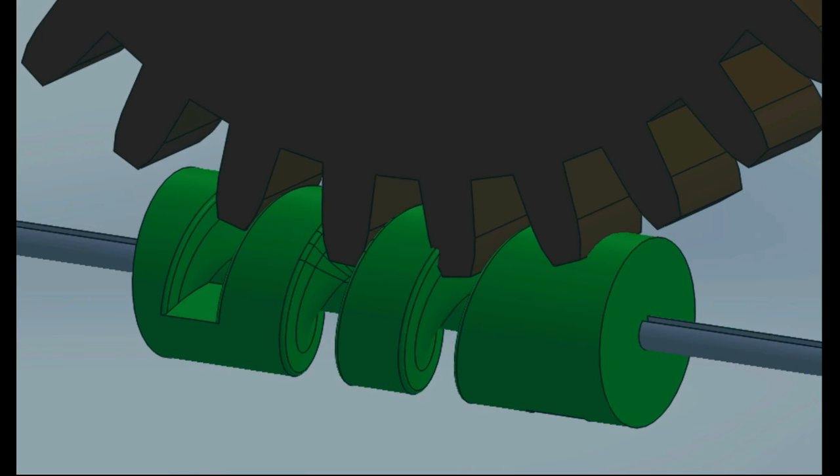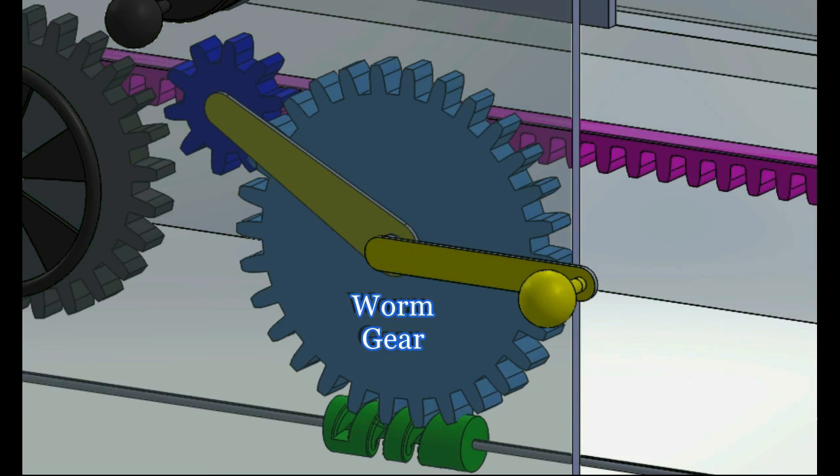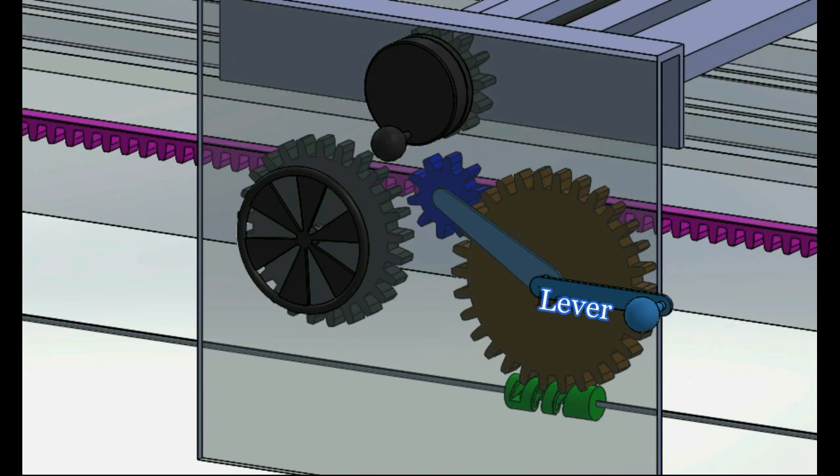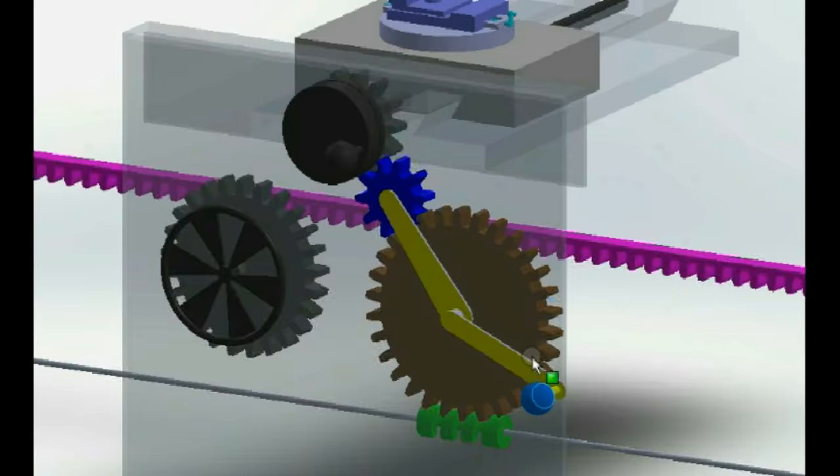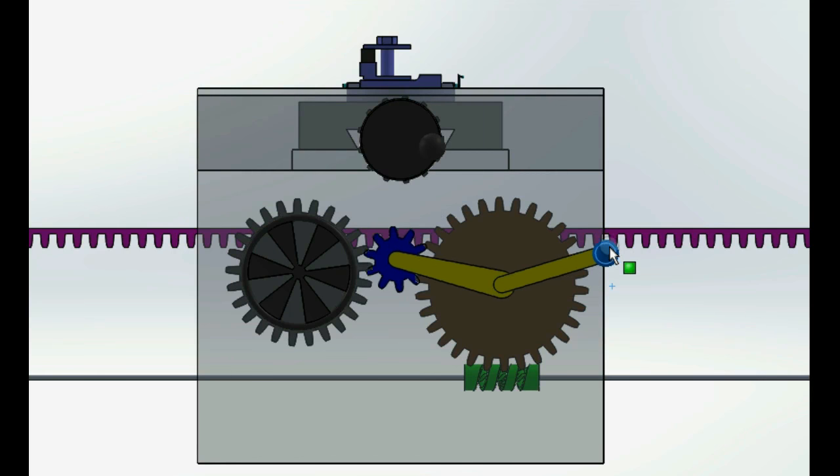This lever is used to move the intermediate gear so as to either provide the power feed or power cross feed or neither of them. In this position of the lever, power is transmitted from the feed rod to the worm gear.